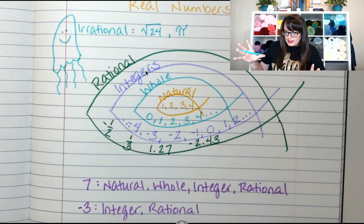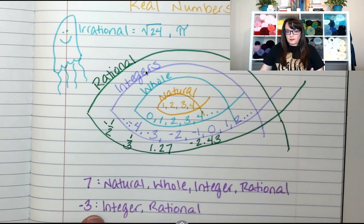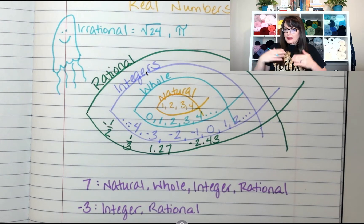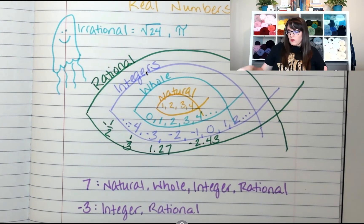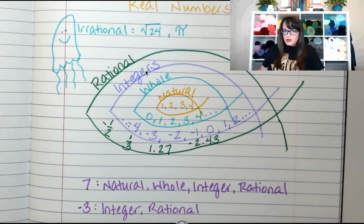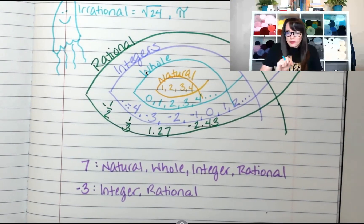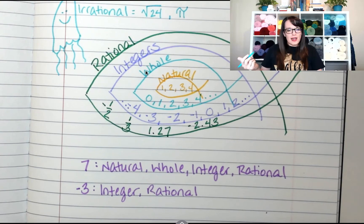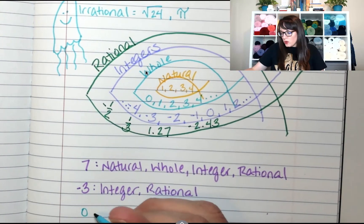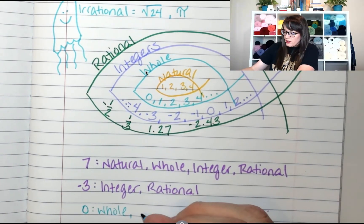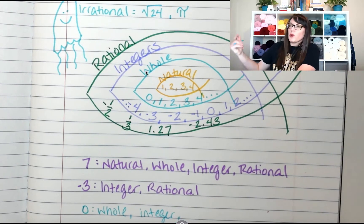Our goal for this lesson is to find a number, identify its sets and subsets, and list them. Like negative three is an integer and rational. What about zero? Zero is always the tricky one. Zero is not a natural number, because we don't start counting at zero. Zero is a whole number, so it's also an integer and also rational.